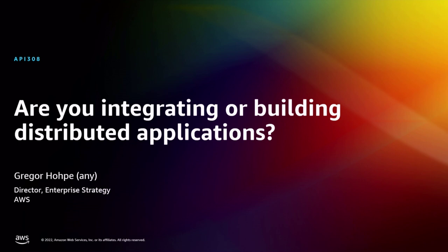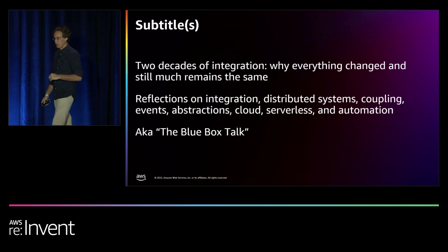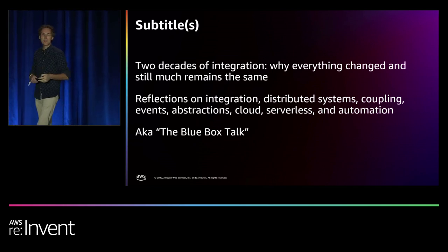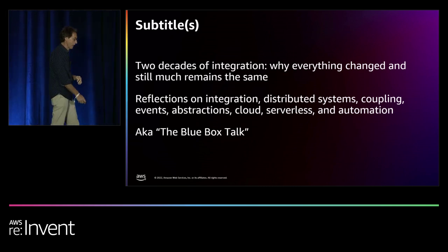Welcome to API 308, where we want to discuss some questions around distributed systems and integration. One of the challenges in our industry is naming. Naming things is hard, and that's also true for talks. So I had a hard time naming this talk. One fair description would be sort of two decades of integration — why a lot of things changed, but many things also remain the same.